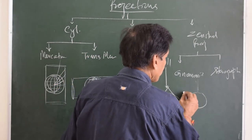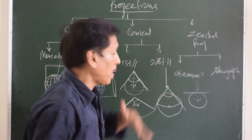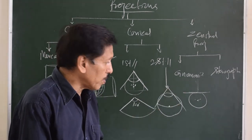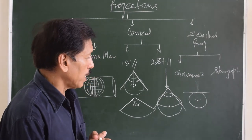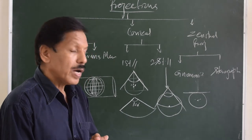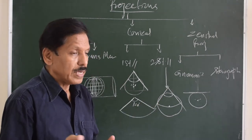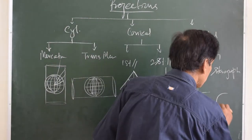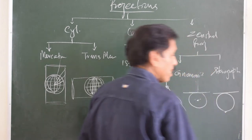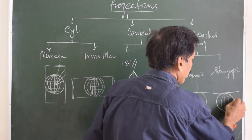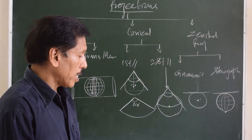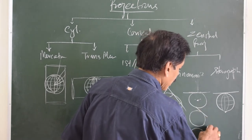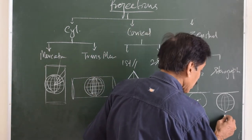Gnomonic projection has the light placed at the center of a transparent sphere, with a plane tangenting some point on the earth. The special property of gnomonic projection is that every great circle appears as a straight line on the chart — or conversely, any straight line drawn on the chart is a great circle, representing the shortest distance between two places. If instead the light is placed at the diametrically opposite point of the sphere, the resulting projection is called stereographic projection. Depending on where the tangent surface is, a projection may be called polar gnomonic, oblique gnomonic, equatorial gnomonic, polar stereographic, oblique stereographic, or equatorial stereographic.